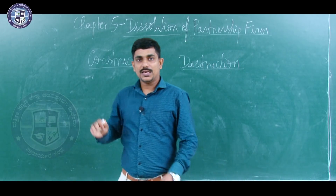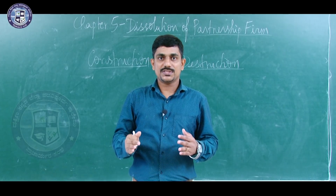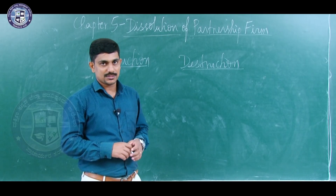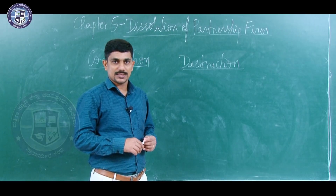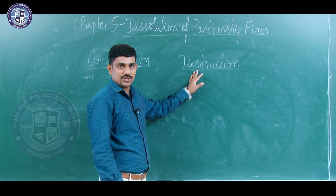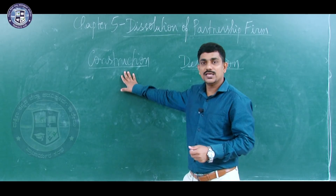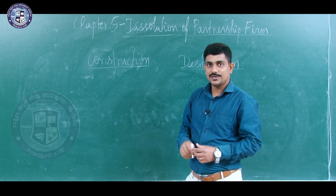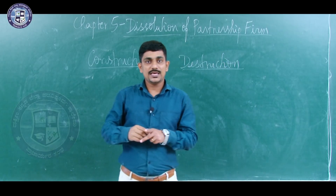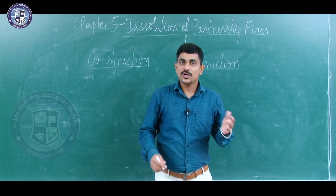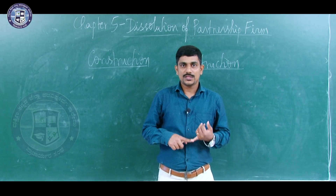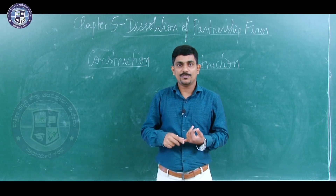When I say dissolution of partnership is the easiest chapter compared to admission, retirement, and death — why is it easiest? Dissolution deals with closing down of the business, while other chapters deal with running the business. Closing a business is easier because it requires less time and less effort. That is one reason why dissolution of partnership firm is easy.